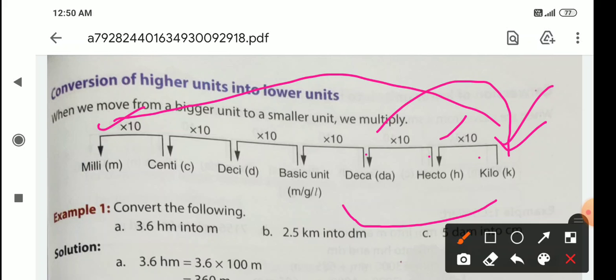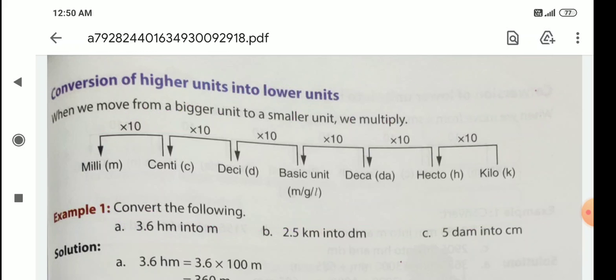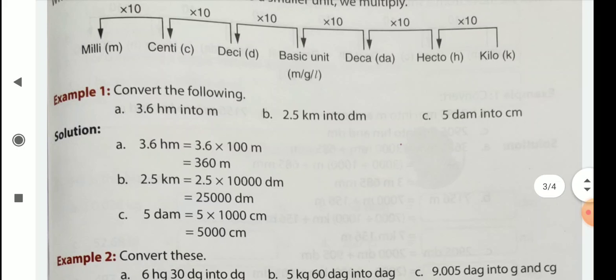Suppose if we convert kilometer to millimeter, how many tens are there? 1, 2, 3, 4, 5, 6 tens are there. So 1 kilometer equal to how much millimeter? After 1, you put 6 zeros. Clear? Here, now see the examples.